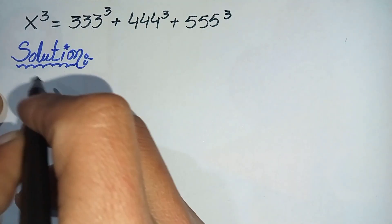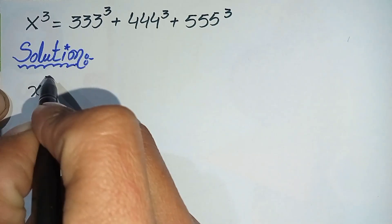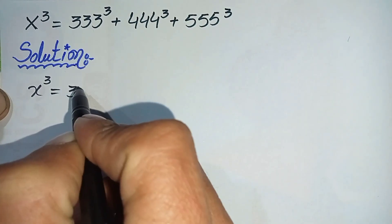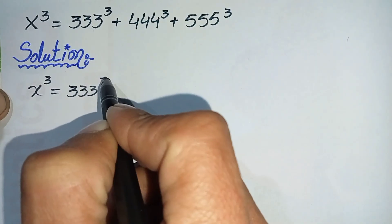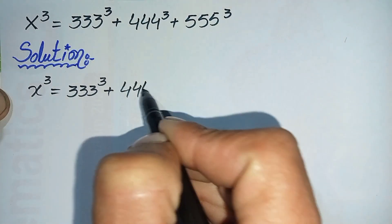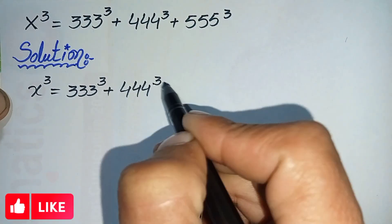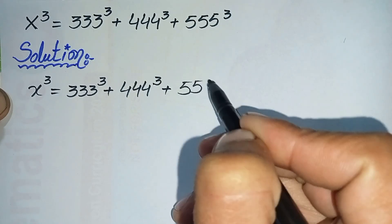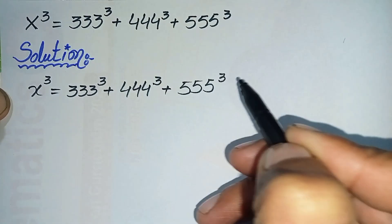The question is: x raised to power 3 is equal to 333 raised to power 3, plus 444 raised to power 3, plus 555 raised to power 3.